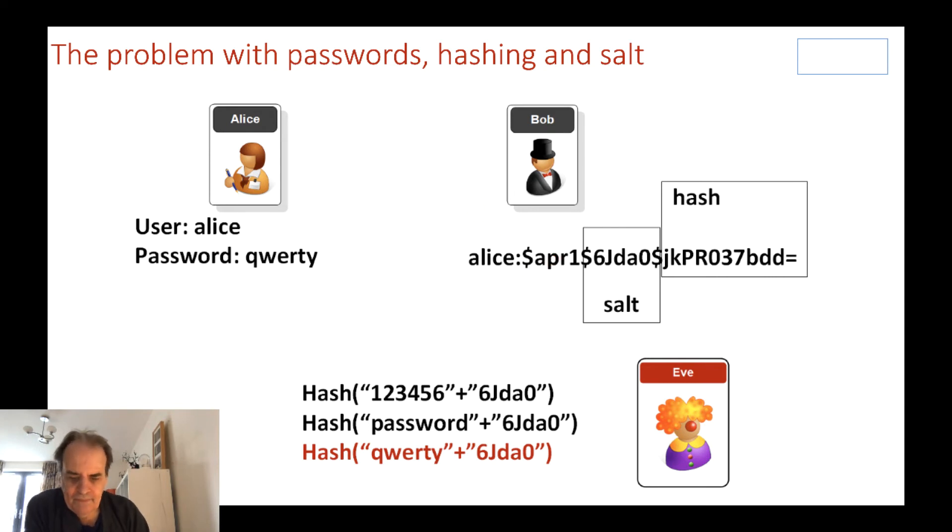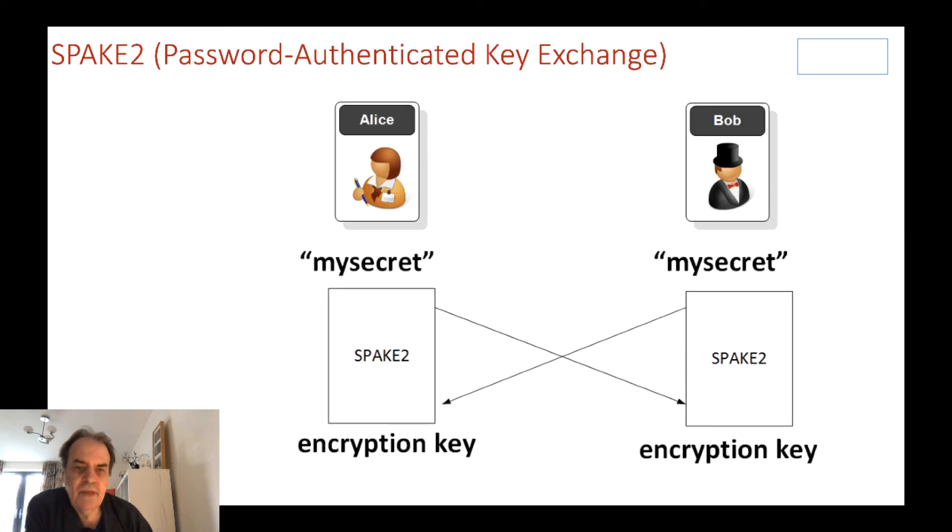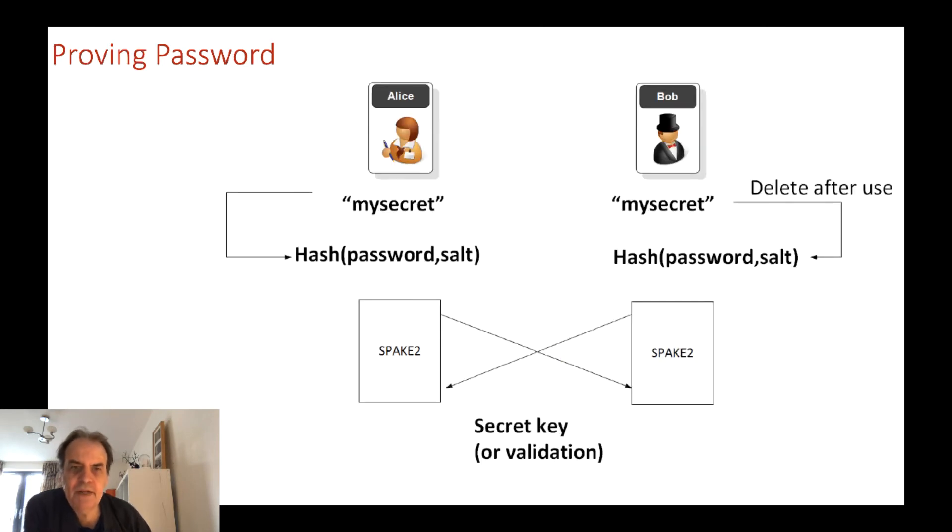So is it possible for Alice not to actually send her password to Bob? SRP is one such protocol where we have a stored secret here and another secret over here. There is some exchange of the parameters and we will end up with the same encryption key after this.